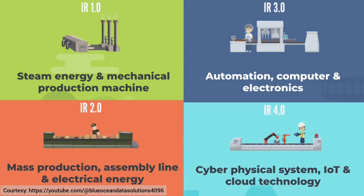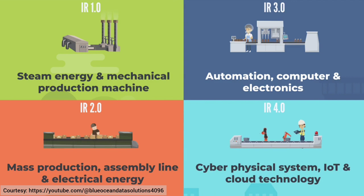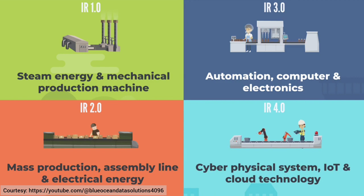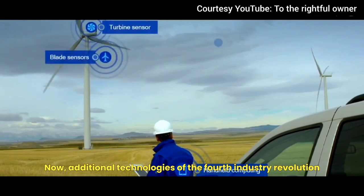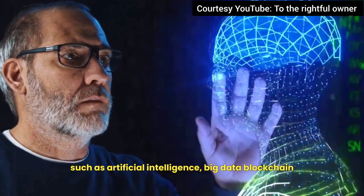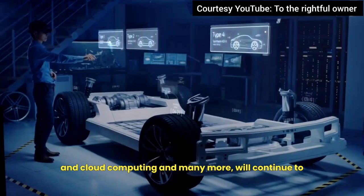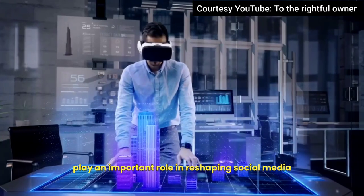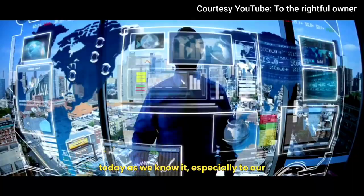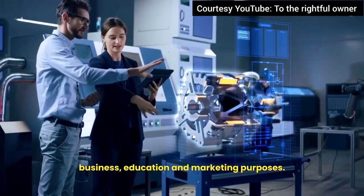The third industrial revolution really laid the foundations for Industry 4.0, and the computerization and digitization of businesses throughout the world gave us the building blocks leading to Industry 4.0. The key difference with Industry 4.0 is focusing on connectivity and tying together all this technology and data that's been accumulating over years and decades. Additional technologies such as artificial intelligence, big data, blockchain, and cloud computing will continue to play an important role in reshaping social media today, especially toward business, education, and marketing purposes.